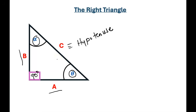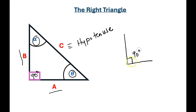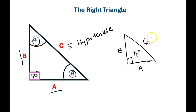A quick recap: a right triangle is any triangle that has two of its sides perpendicular to each other. Here we have a 90-degree angle at this corner. We can label the length of one side as A and the length of the other as B. The side that is opposite to this 90-degree angle forms our hypotenuse, which is side C.